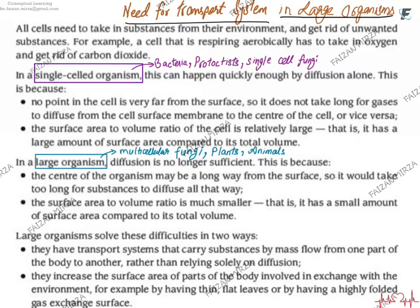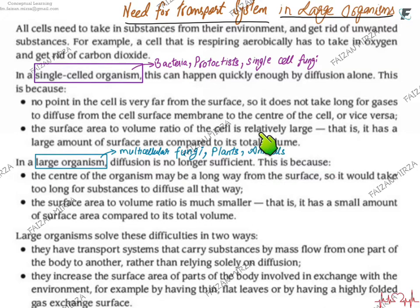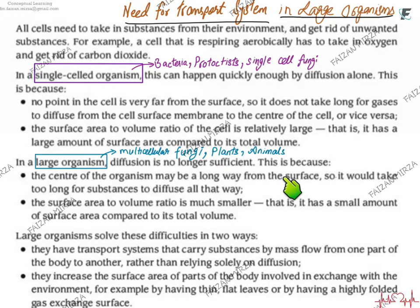When discussing transport in mammals, why do we need a transport system in large organisms? In single-celled organisms such as bacteria, protists, or single-celled fungi, diffusion alone is actually sufficient to bring about all the exchanges required to sustain life within that particular organism. They have a surface area to volume ratio which is relatively large, and because of that large surface area to volume ratio, they rely on diffusion alone.